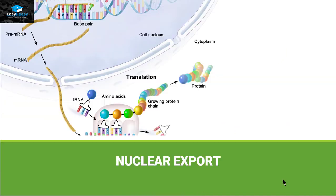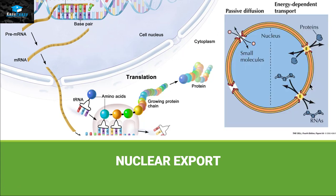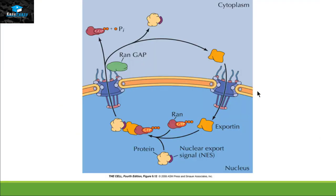Nuclear export. One might wonder what type of protein exits the nucleus, since protein synthesis occurs in the cytoplasm. The answer is that sometimes enzymes are needed inside the nucleus to perform their function, and once their job is done they need to get out. Those proteins exit the nucleus via a system called nuclear export, which is very similar to nuclear import.